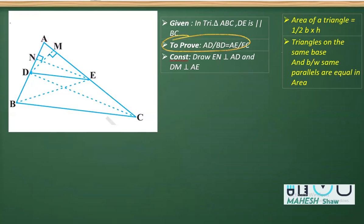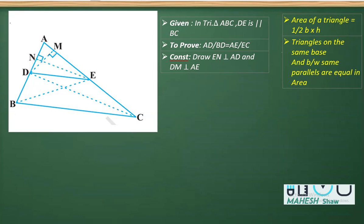In order to prove this, we have a construction. In the construction part, you'll be drawing DM perpendicular to AE and EN perpendicular to AD. Further, you'll also be joining BE and DE. That's the part of the construction.